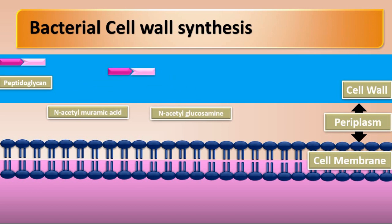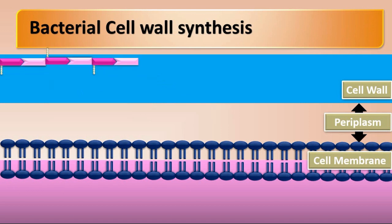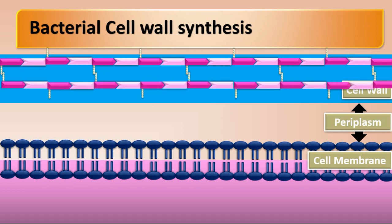These polymers are cross-linked with one another by a chain of four amino acids. The bacterial cell wall maintains the shape and size of the organism and prevents the bacteria from bursting if fluid flows into it due to osmosis.